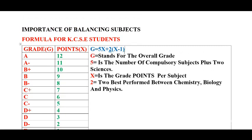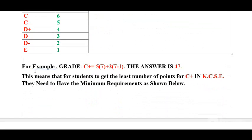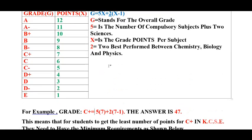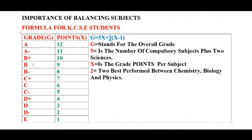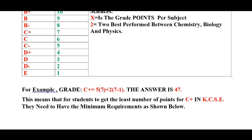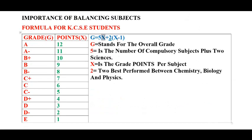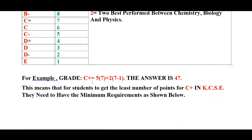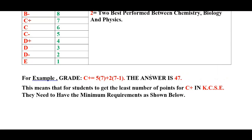Let us use this formula to check the points needed for grade C plus. For a student who needs a C plus, you should know the overall number of points required. For grade C plus, the grade point is seven, so we substitute seven for x. When you calculate, the answer is 47 points.